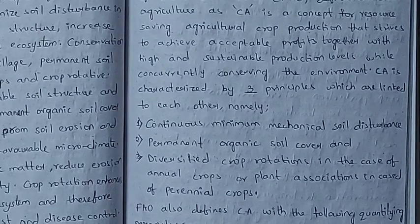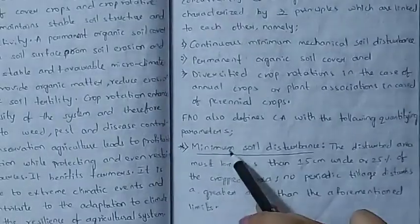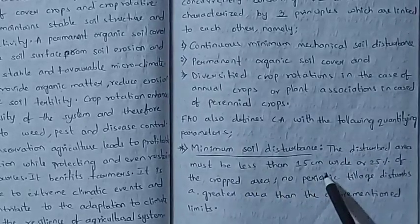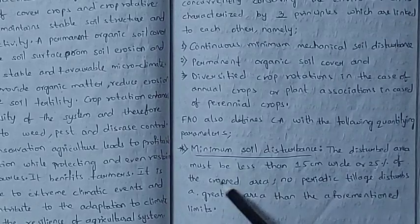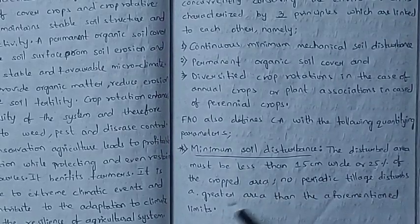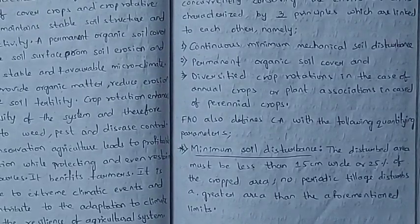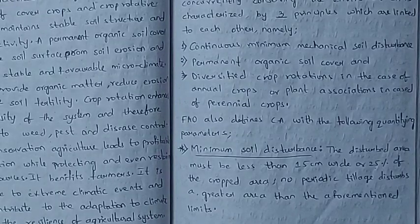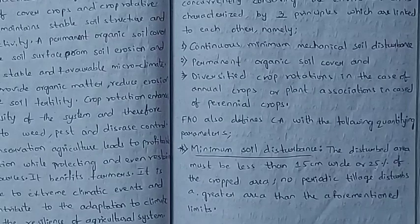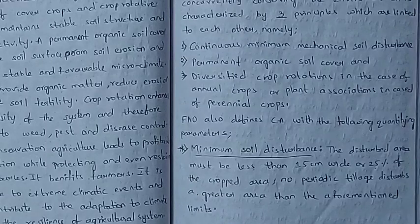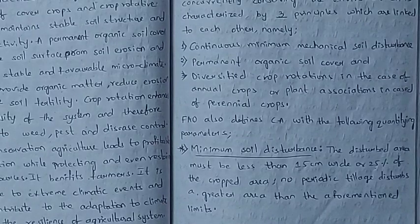Regarding minimum soil disturbance, the disturbed area must be less than 15 cm wide or 25% of the cropped area. The no tillage method is very important because it limits soil disturbance from ploughing, keeping disturbance below these limits.